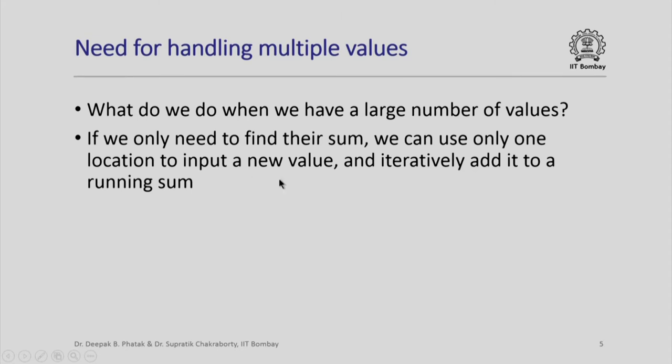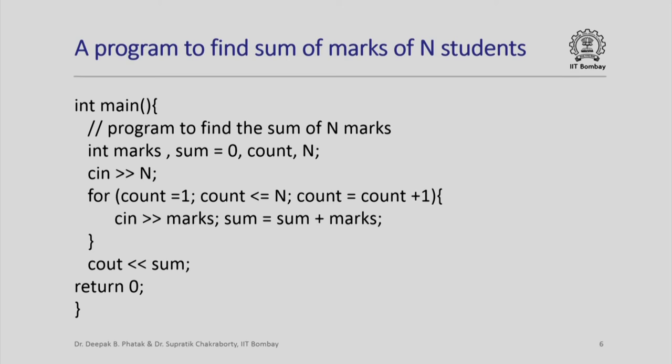If we only need to find their sum, well we can use only one location and keep on adding the new input value into that sum iteratively. In this case we require only one location. Here is a program which finds sum of marks for say n students suppose they have given a quiz and the quiz marks are available. I now declare only a single variable marks. I of course declare sum with initial value of 0, I propose to use count as an integer variable to set up a for iteration, n is the number of marks or number of students whose marks I wish to add.